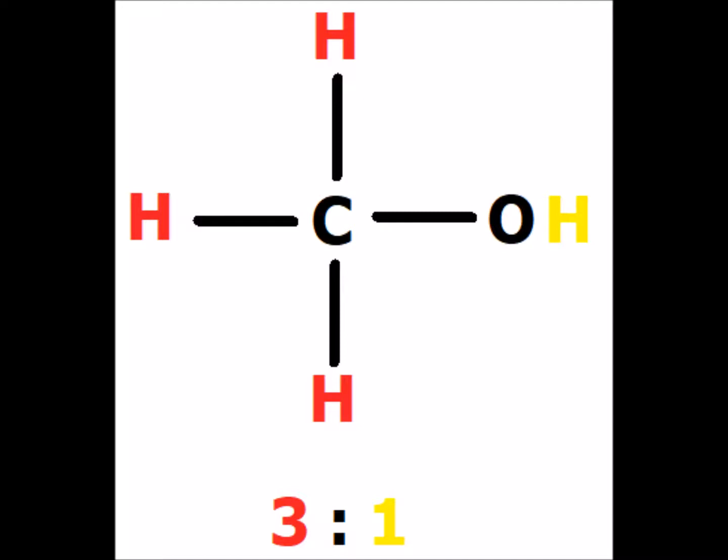In methanol, the three red hydrogens are symmetry equivalent, and symmetry equivalent hydrogens do not couple — they do not act as neighbors. There is a single hydroxyl hydrogen, but because of exchange, this hydrogen does not couple with the other hydrogens in the sample. Therefore, not only do we have a three-to-one intensity ratio for the two hydrogen signals, neither one of the signals is going to be split because there is no coupling by neighbors.